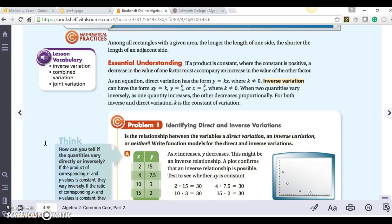Good morning. We're looking at inverse variation today. It says if a product is constant, product is where I'm multiplying, where the constant is positive, a decrease in value of one factor must accompany an increase in value of the other factor.